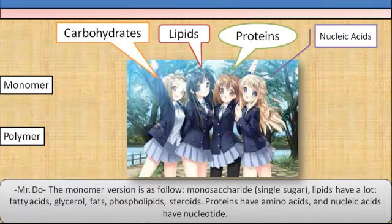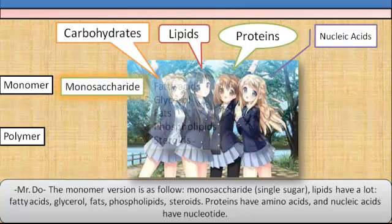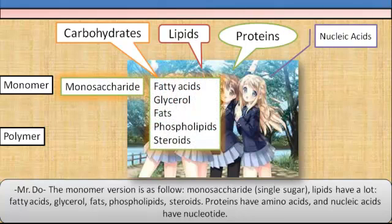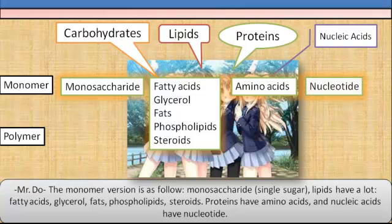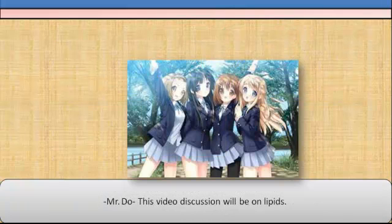The monomer versions are as follows: monosaccharide (sugar) for carbohydrates; lipids have fatty acids, glycerol, fats, phospholipids, and steroids; proteins have amino acids; and nucleic acids have nucleotides. This video discussion will be on lipids.